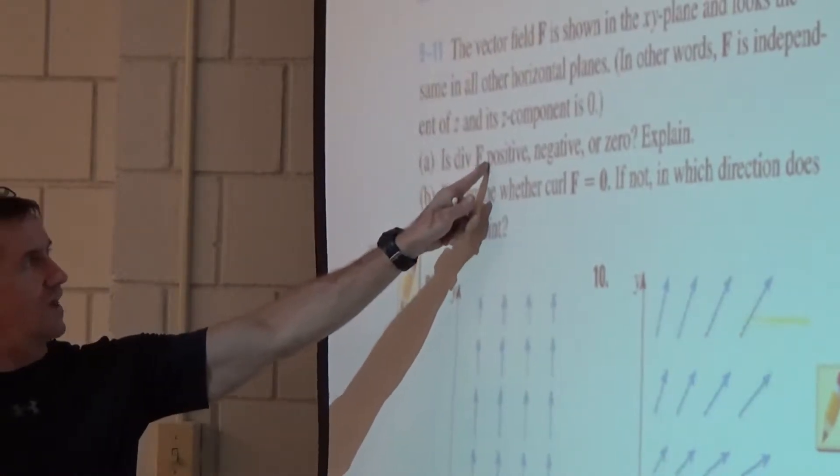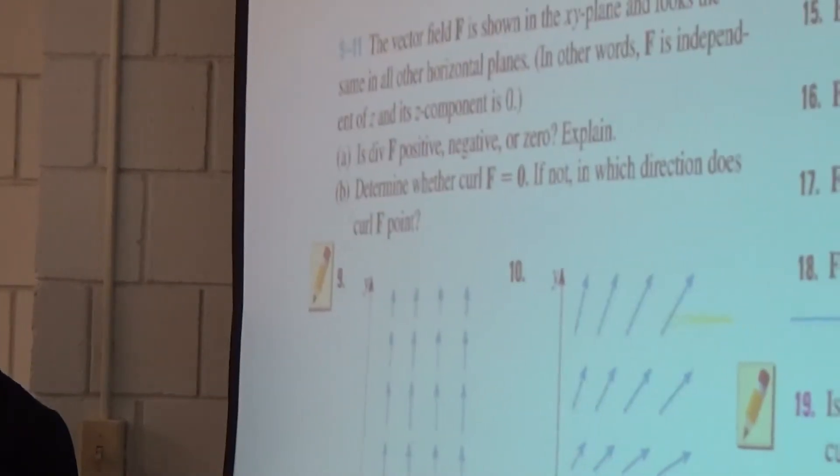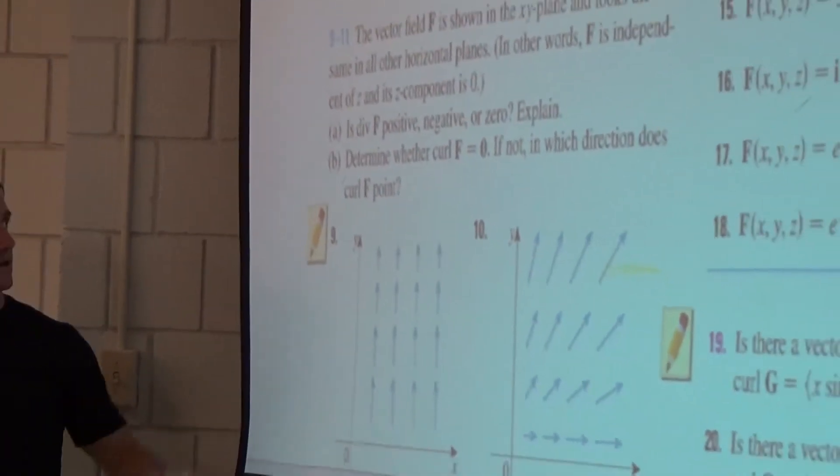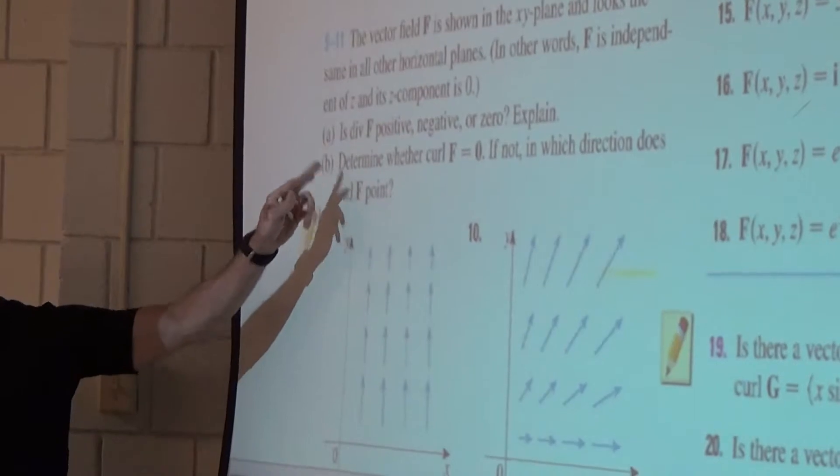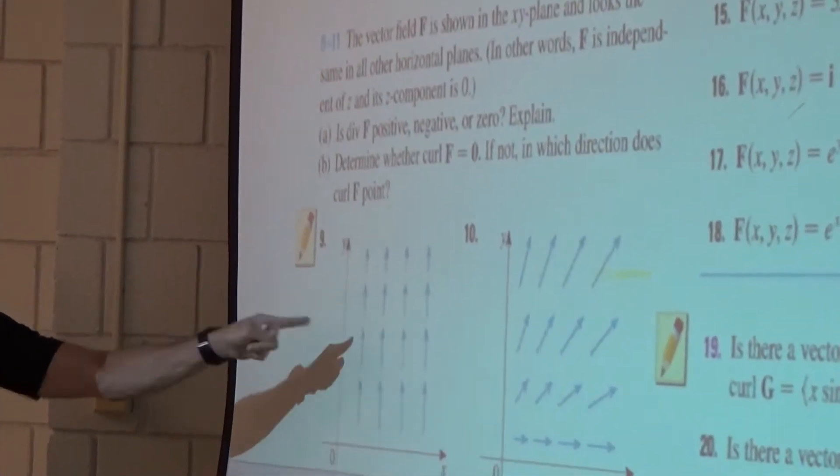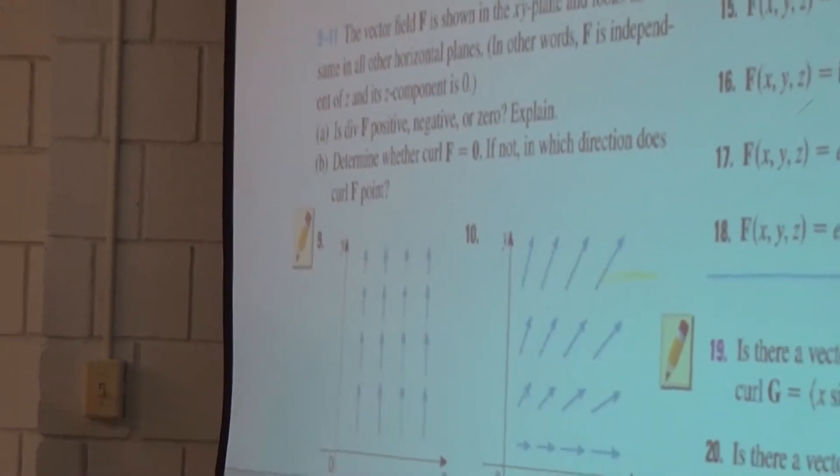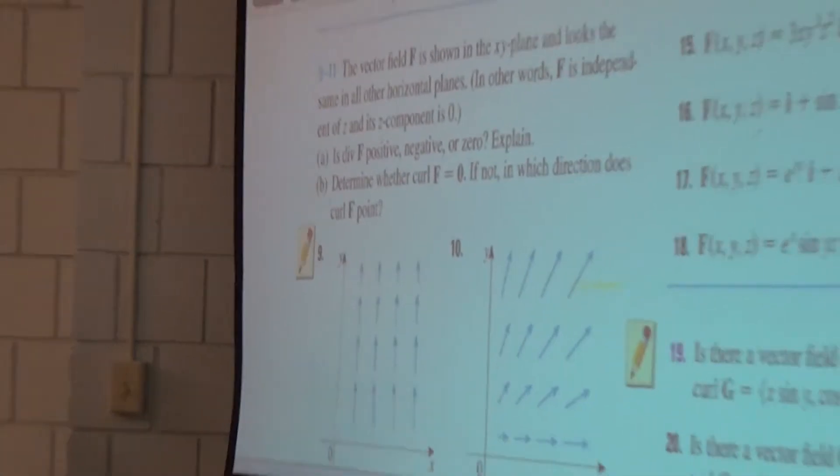Is the divergence of f positive, negative, or zero? So we're gonna start with that. This is number nine, and we're gonna look at the divergence of f. As for letter b, we'll get to that in a second, but we're gonna start with this.